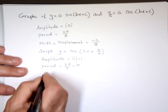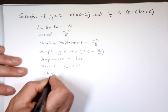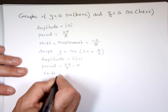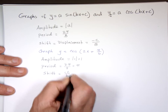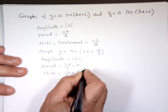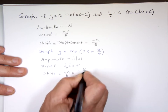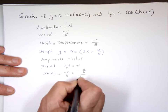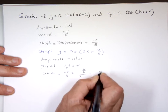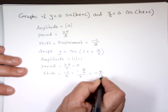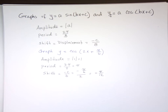My shift is negative C over B. C is π/6, so it's negative π/6 divided by 2, which is negative π/12. Dividing by 2 is the same as multiplying by one half.